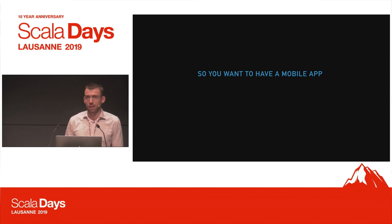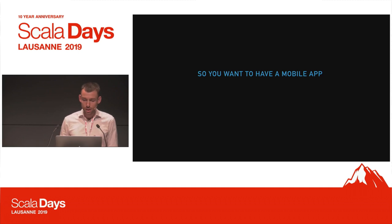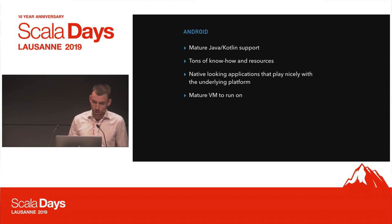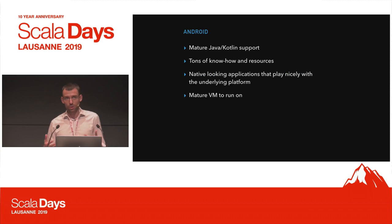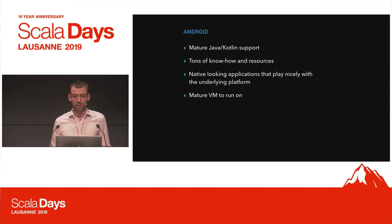Imagine that you are put in a situation where you are a team of developers and you want to have a mobile application. There are a few different ways you can go about that. One of them is to go the native way and respectively write your version for iOS and Android. On Android, you benefit from using Java or Kotlin.